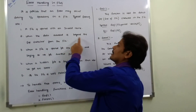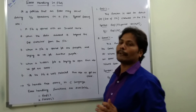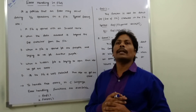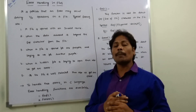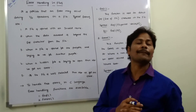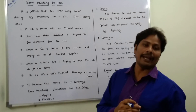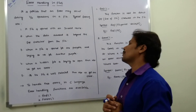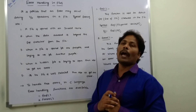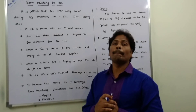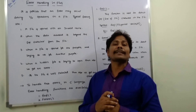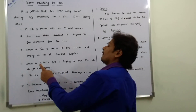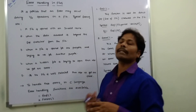The second error is when data accessed is beyond the EOF character. Suppose a file has 200 records and you try to access the 201st record — an error will occur. The third error is when a file is opened for one purpose but used for another; for example, opening a file for reading but trying to write into it causes an error. The fourth error is when a hidden file is opened — that also causes an error.